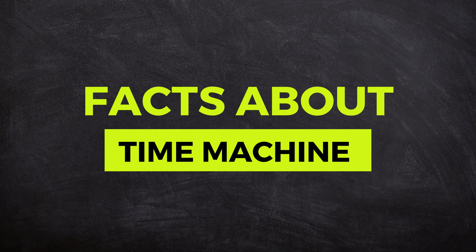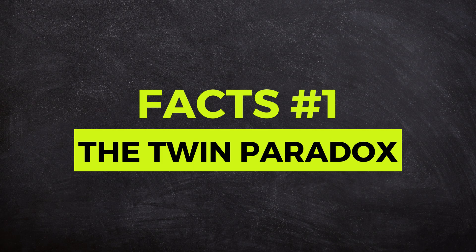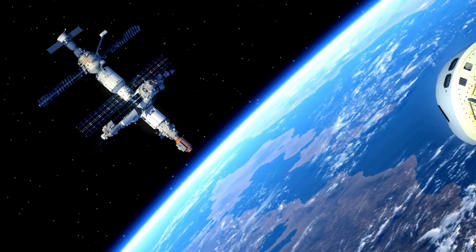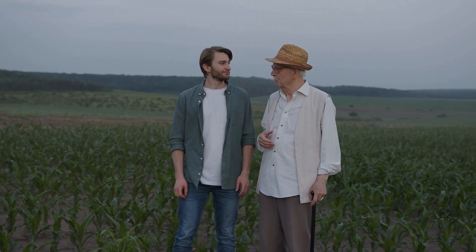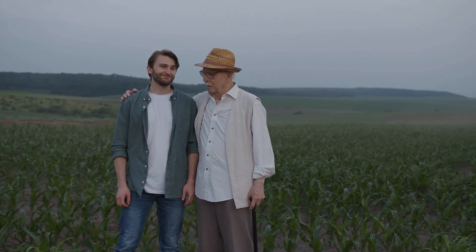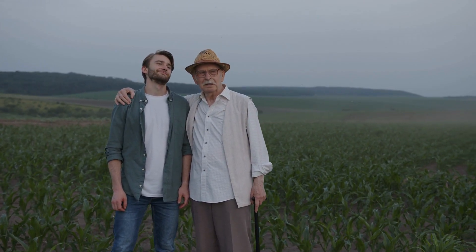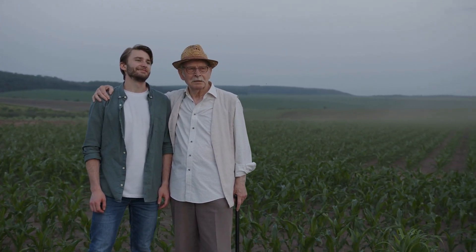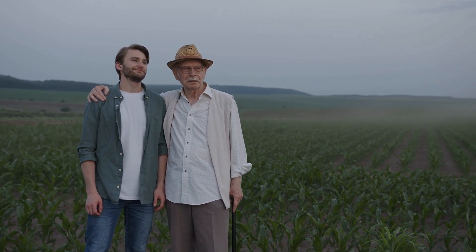Now let's learn about some amazing facts related to time travel. Fact number one is the Twin Paradox. Imagine you have a pair of identical twins. One stays on Earth while the other travels at near-light speed into space and then returns. Surprisingly, when the space-traveling twin returns, they will be younger than their Earth-bound sibling. This phenomenon occurs due to time dilation — the slowing down of time for the moving twin relative to the stationary one.